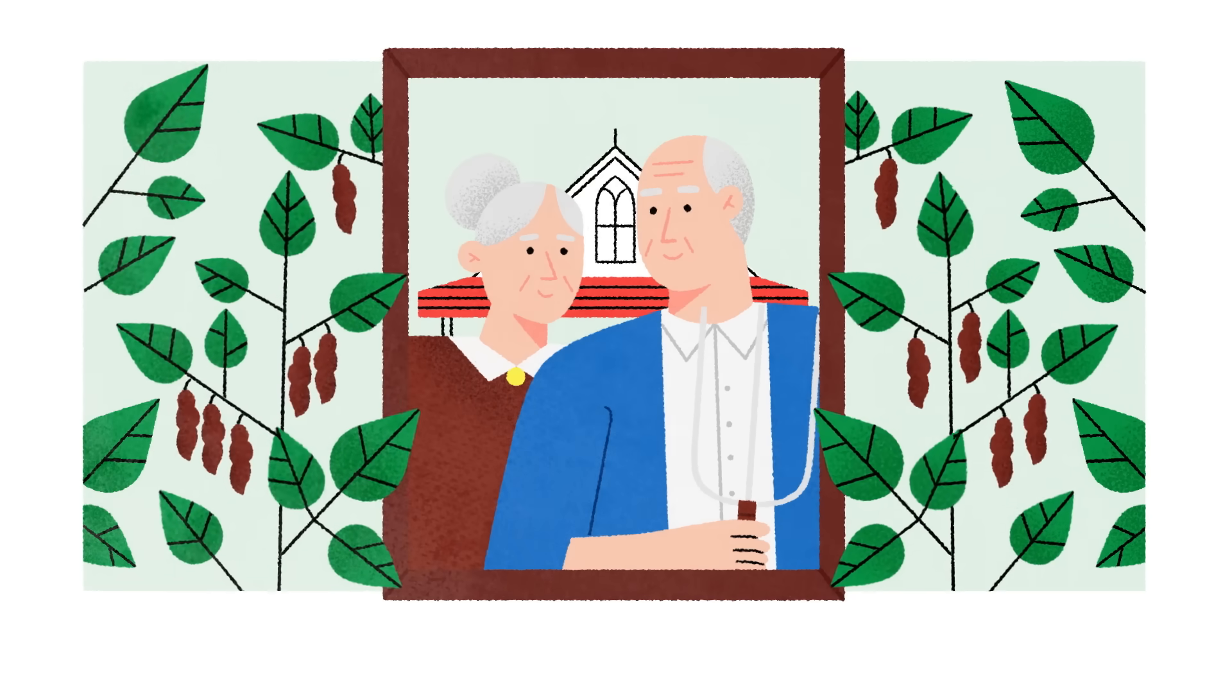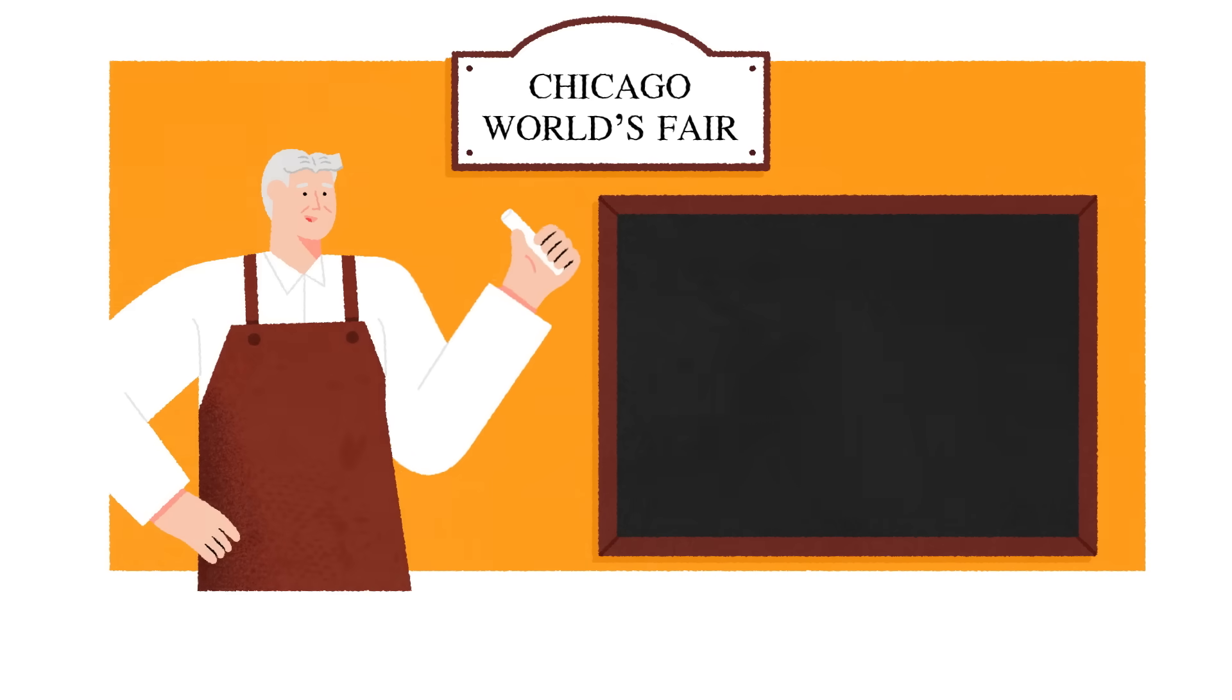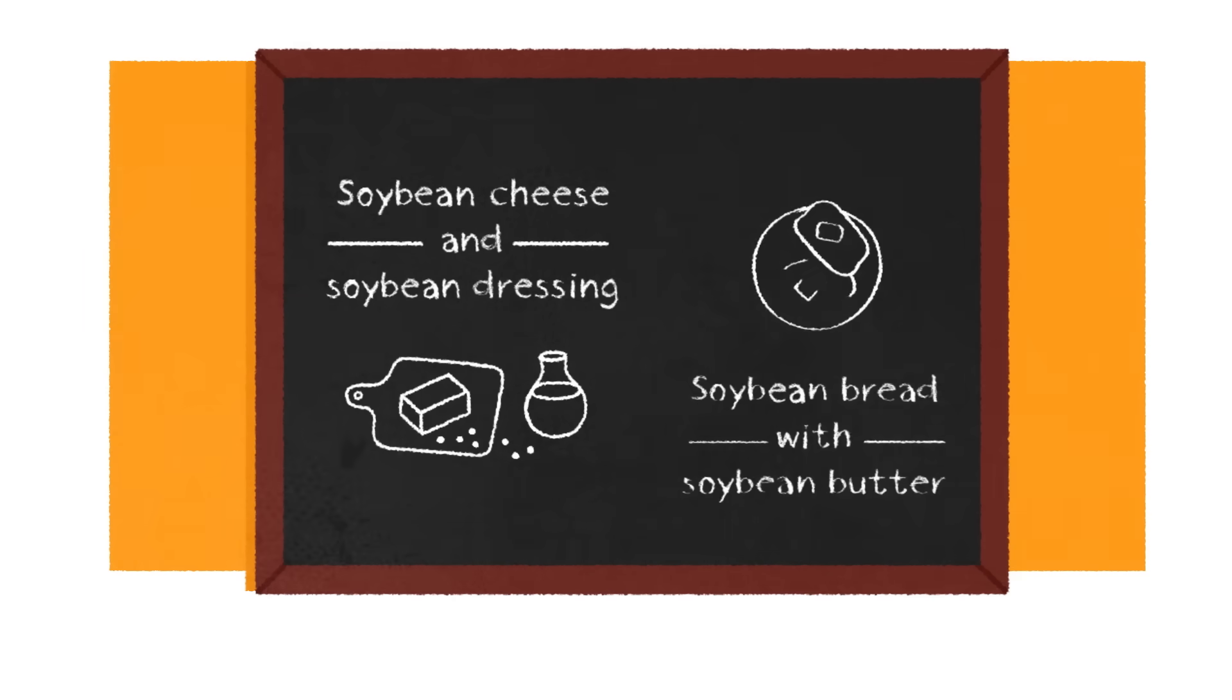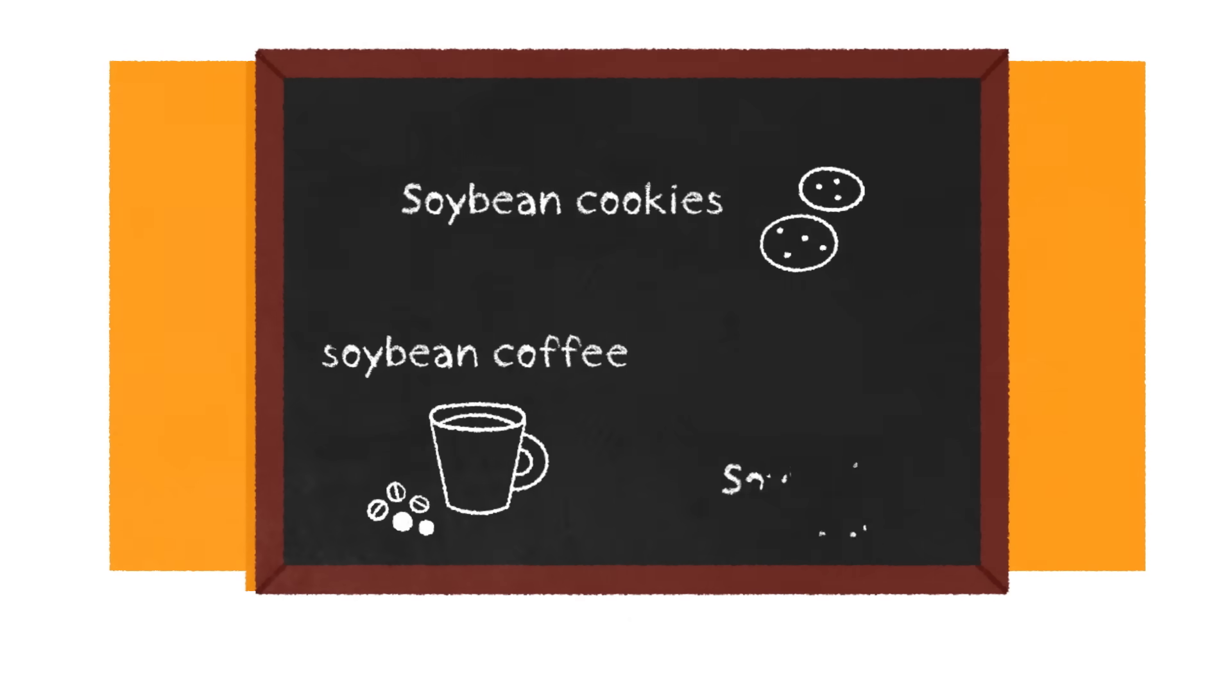But he wasn't just feeding soy to machines. At the Chicago World's Fair, he hosted a soy-centric feast. The ingredient had been a staple in Asian cuisine for centuries. But Ford's dinner, full of soy substitutes for dairy, meat, and wheat, took the integration of soy into food a step further.